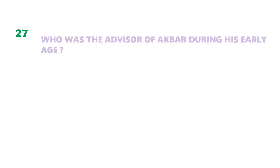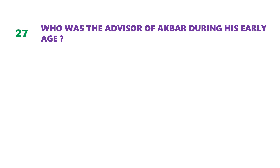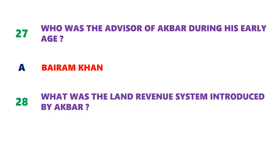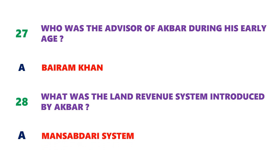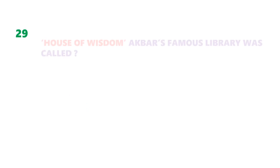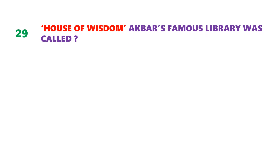Question number 27: who was the advisor of Akbar during his early age? Bairam Khan was the advisor of Akbar during his early age. Next question: what was the land revenue system introduced by Akbar? Mansabdari system was the land revenue system introduced by Akbar. Question number 29: what was Akbar's famous library, the house of wisdom, called? Baitul Hikmat was the house of wisdom, which was Akbar's famous library.